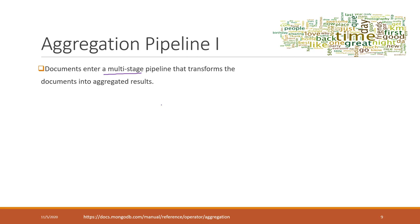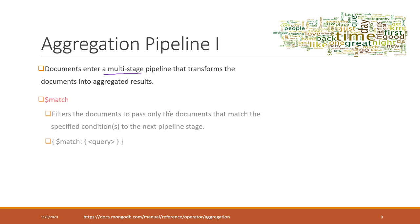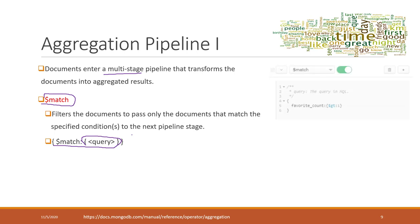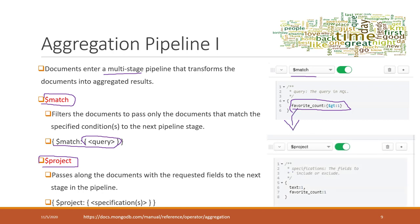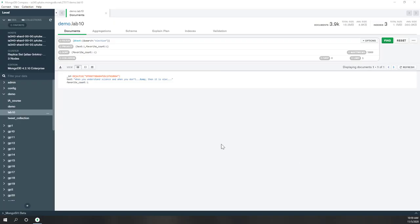There are several operators you can use at each stage. You can use 'match', which simply defines your queries — for example, finding tweets with a favorite count greater than one. You can also use 'project' so that for those filtered tweets you can specify which fields to return, like text and favorite count.